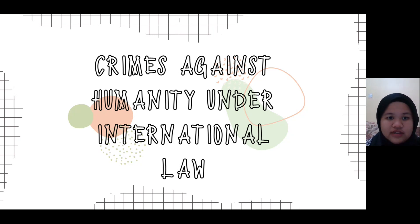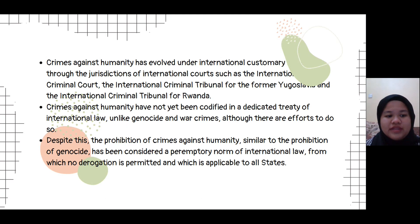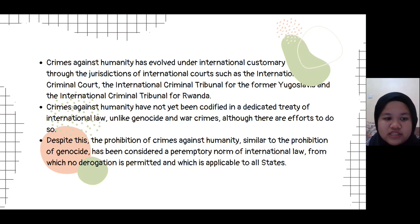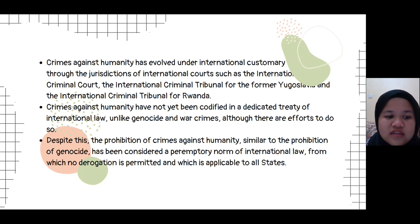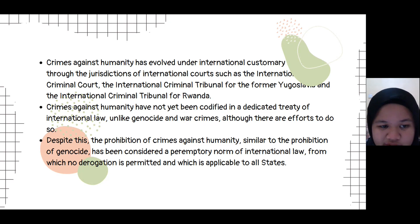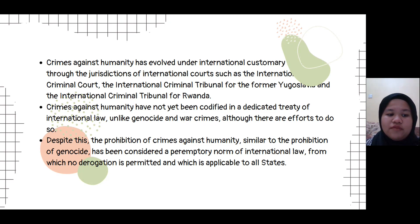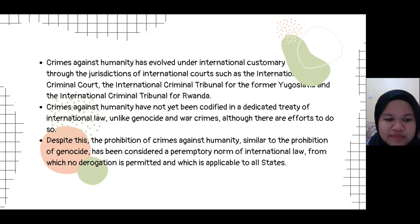Let's move to crimes against humanity under international law. Crimes against humanity have evolved under international customary law and through the jurisdictions of international courts, such as the International Criminal Court, the International Criminal Tribunal for the former Yugoslavia, and the International Criminal Tribunal for Rwanda. Many states have also criminalised crimes against humanity in their domestic law, while others have yet to do so. Crimes against humanity have not yet been codified in a dedicated treaty of international law, unlike genocide and war crimes, although there are efforts to do so.